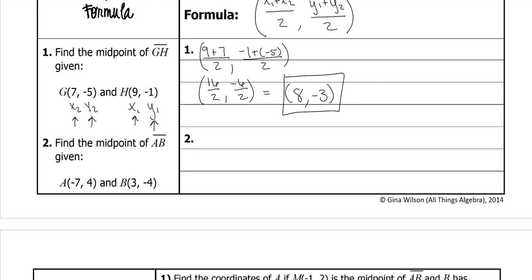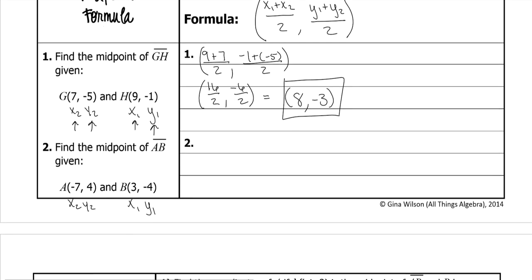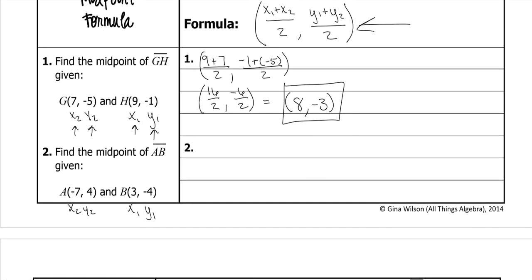All right, then the next one. Find the midpoint of AB. So again, set up your stuff. We're going to plug it into this equation: x1 is 3 plus x2 is negative 7 and divide that by 2. Y1 is negative 4 plus y2 is 4, divide that by 2. Deal with the numerators first.